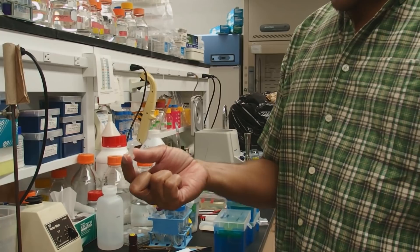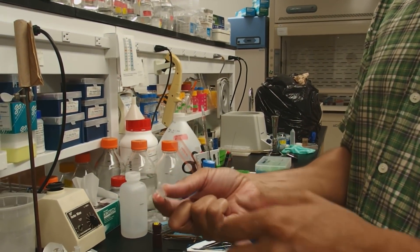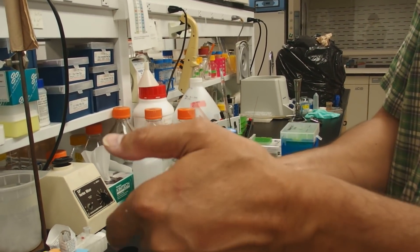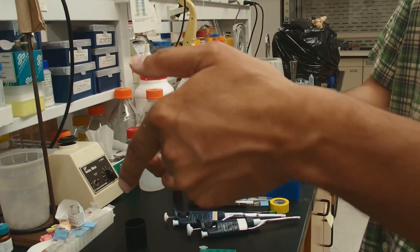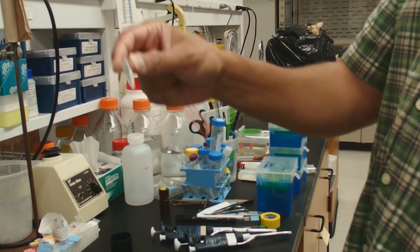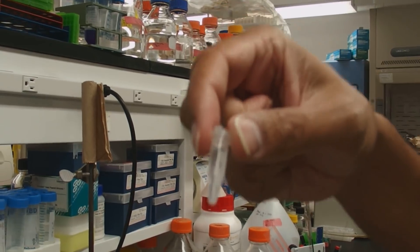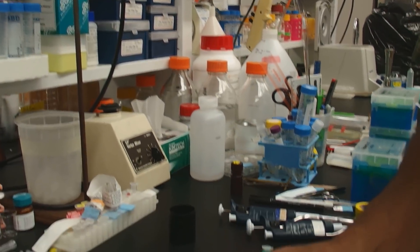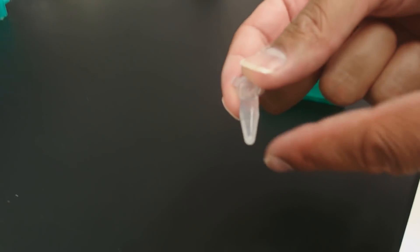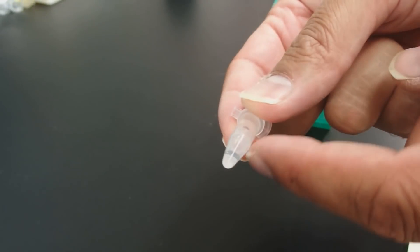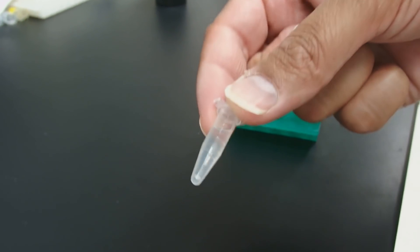Once we add 70% ethanol, the pellet becomes even more white. So we want to just mix this a few times. Like that. Now you can see this pellet. Let's put it against the black background maybe. You can see that the pellet has actually now dislodged from the wall. There. You can see that.